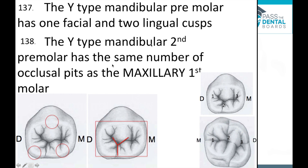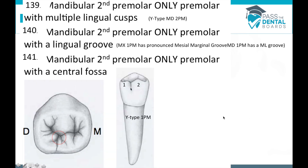The Y-type mandibular second premolar has one facial cusp and two lingual cusps. The Y-type mandibular second premolar has the same number of occlusal pits as the maxillary first molar — three pits. The mandibular second premolar is the only premolar with multiple lingual cusps, and the only premolar with a lingual groove. It is also the only premolar with a central fossa — usually there are just two fossae (mesial and distal), but this one has a central fossa.